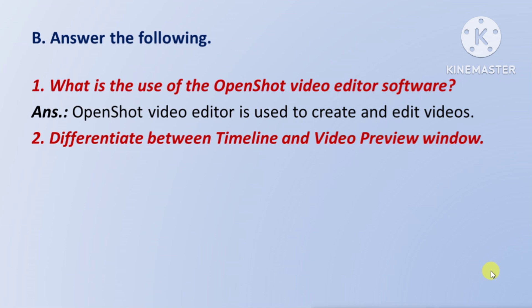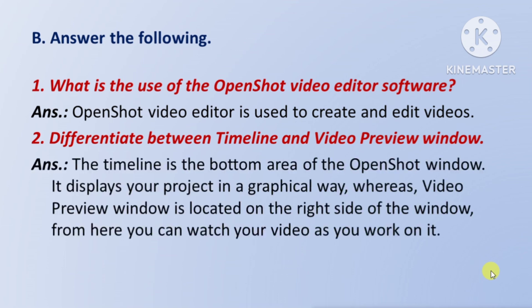Next question: differentiate between Timeline and Video Preview Window — means Timeline aur Video Preview Window mein difference bataiye. Answer: the Timeline is the bottom area of the OpenShot window — means OpenShot window ka jo bottom area hota hai woh hai Timeline — it displays your project in a graphical way. Whereas the Video Preview Window is located on the right side of the window, from here you can watch your video as you work on it.